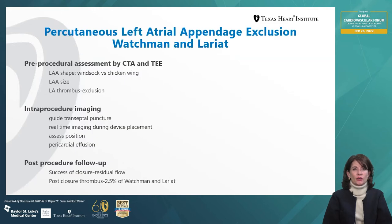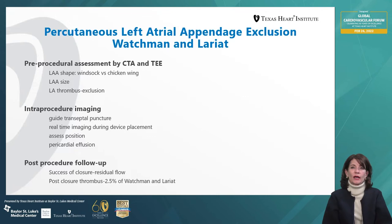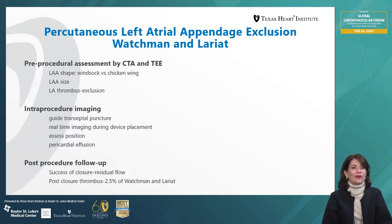We are also a major center for left atrial appendage exclusion, currently using the Watchman and the Lariat device. The Lariat device was developed here at the Texas Heart Institute under the direction of Drs. Billy Cohn and Abdi Rasak, and we have done the largest series in the world using the Lariat. Pre-procedurally we document left atrial appendage shape — whether it's a large chicken wing or a windsock — make detailed measurements of LAA size, and confirm there's no thrombus in the left atrium or appendage.